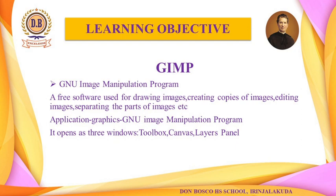What is the full form of GIMP? GNU Image Manipulation Program. How do we open GIMP? GIMP opens as three windows in Ubuntu: the toolbox window, the canvas window, and the layers panel window. The canvas window is the main window, and the toolbox consists of a lot of tools for making things.